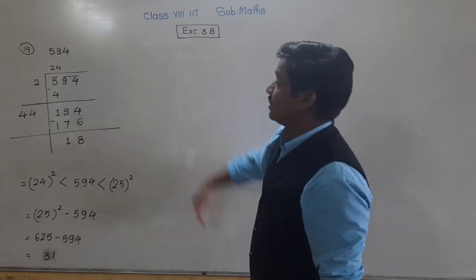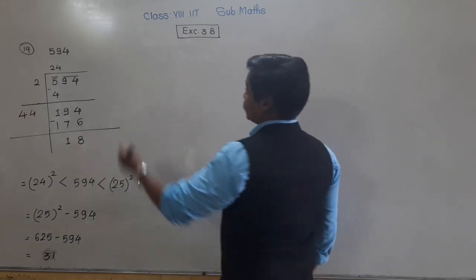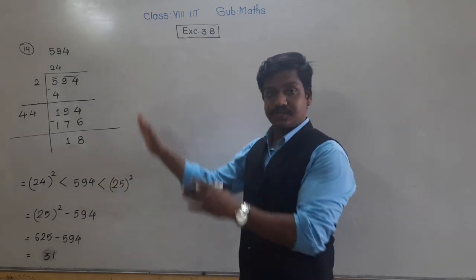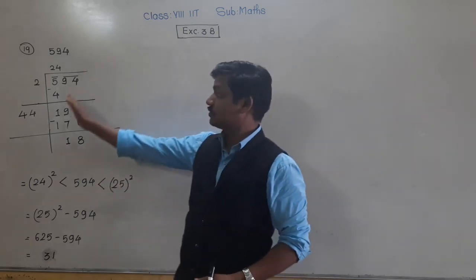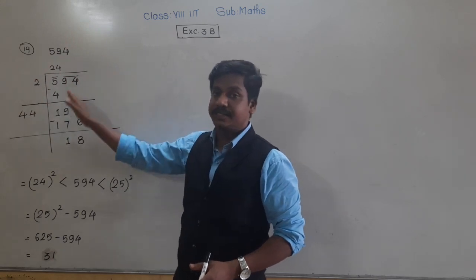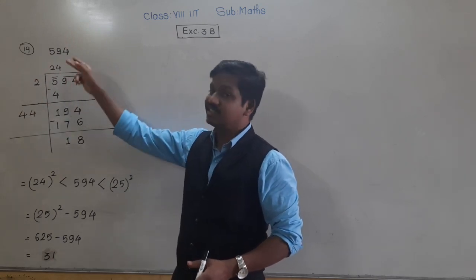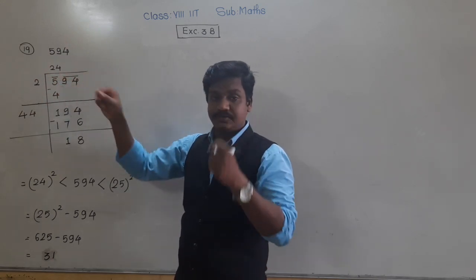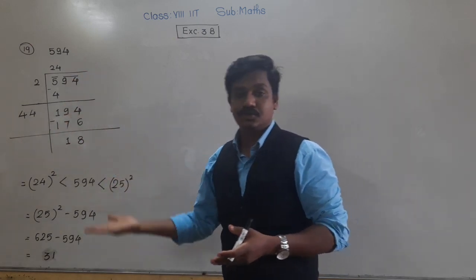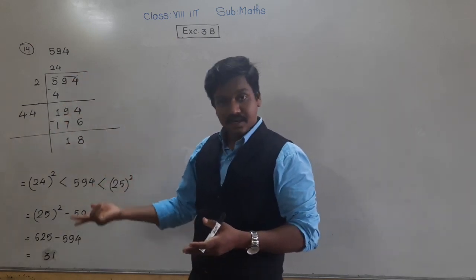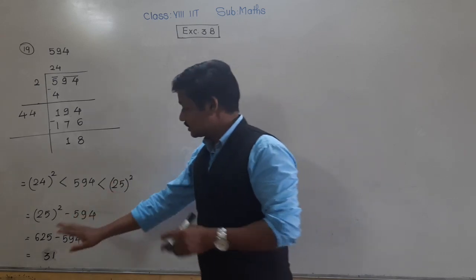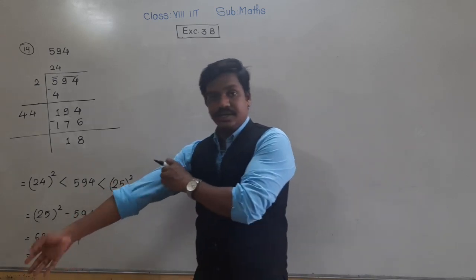Problem number 20 is the same type. You have to do the same steps: first, find by long division method which is the nearest perfect square to the given number. Then you will know which is the nearest greater perfect square, and then do the subtraction.